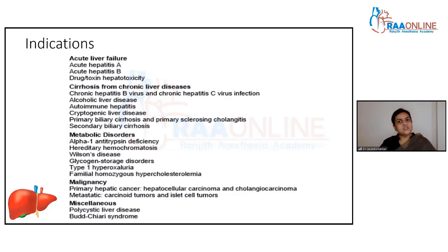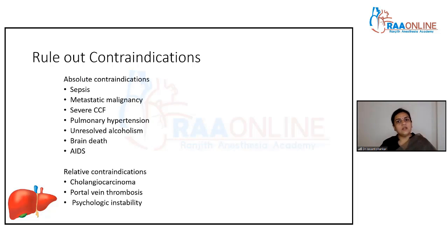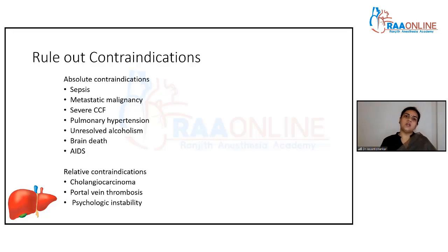The indications are established by the surgeons and hepatologists, but we need to make sure there are no contraindications. The absolute contraindications we look for — first is sepsis. Sepsis is a contraindication because these patients will be put on post-operative immunosuppression so that their body accepts the new liver.